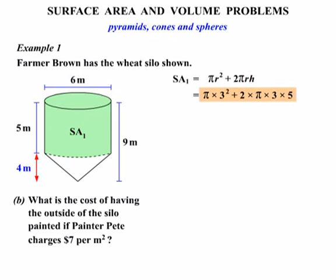Alright, let's work this out, get your calculators ready. Pi times 3 squared plus 2 times pi times 3 times 5, and we end up with 122.522 m².